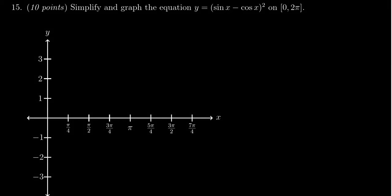In this video, we present the solution to question number 15, for which we're asked to simplify and graph the function y equals sine x minus cosine x squared on the interval 0 to 2π. That interval is already indicated here on the graph.